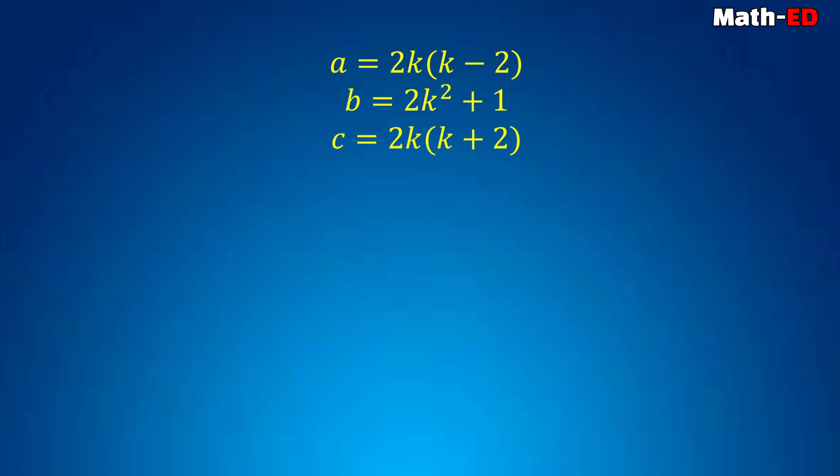So from our assumption, n will be less than or equal to a less than b less than c, which is less than or equal to 2n, because a, b, c all of them are the numbers written on the cards.